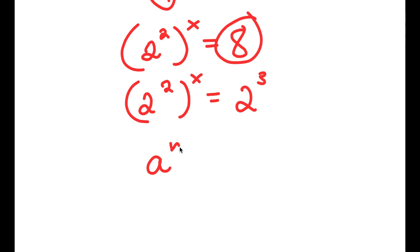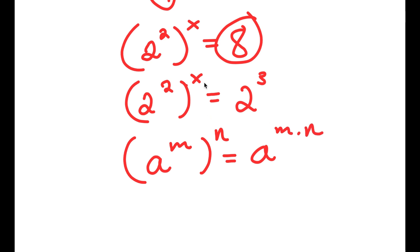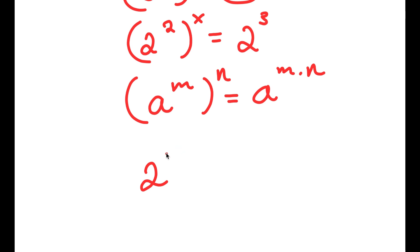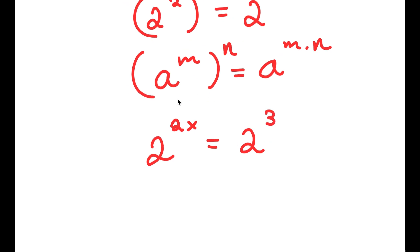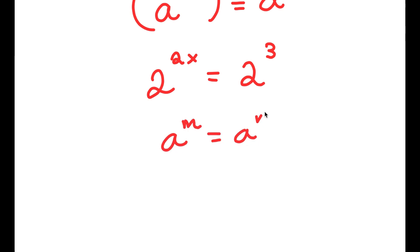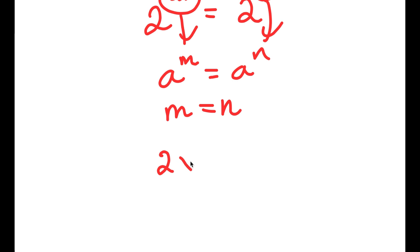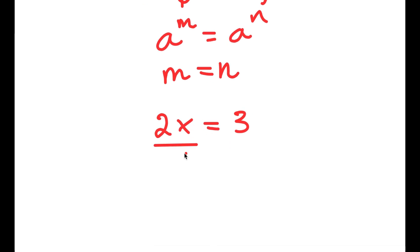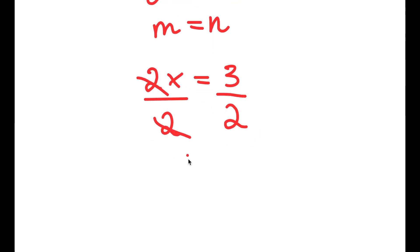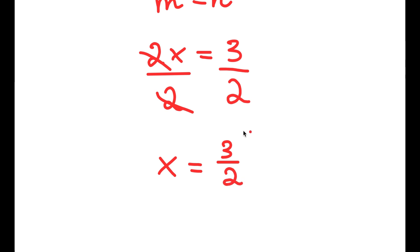Using the property that a to the power of m to the power of n equals a to the power of m times n, I get 2 to the power of 2x is equal to 2 to the power of 3. Since the bases are equal, the exponents must be equal, so 2x equals 3. Dividing both sides by 2, I get x equals 3 over 2.